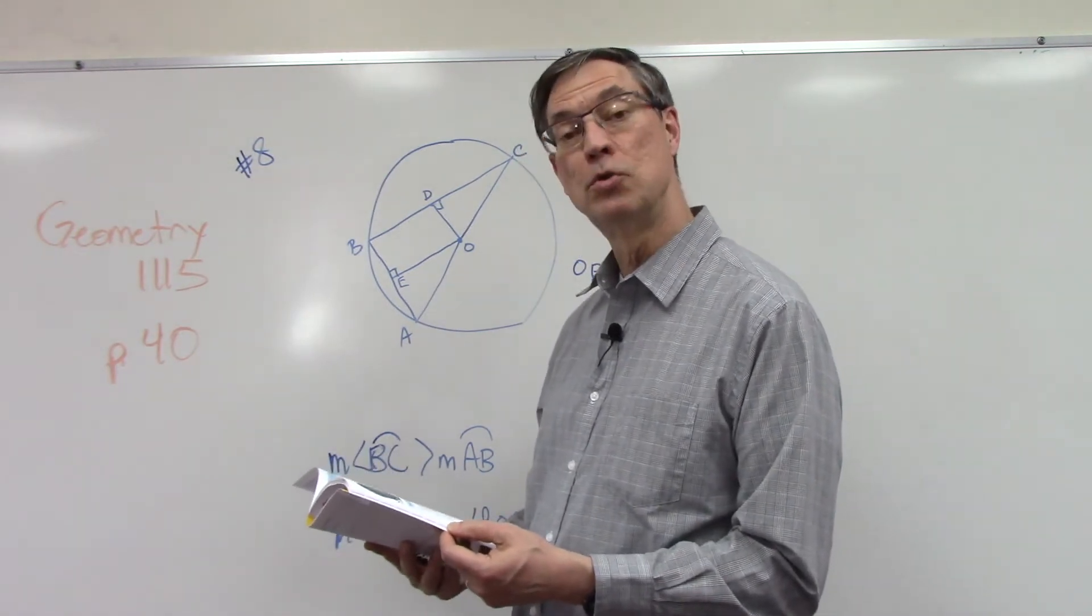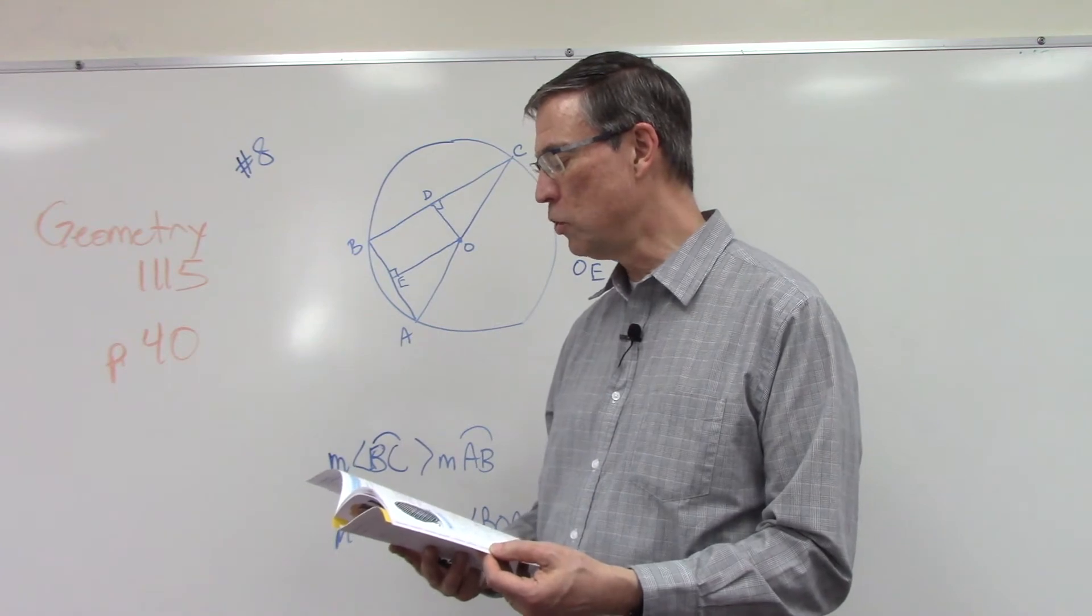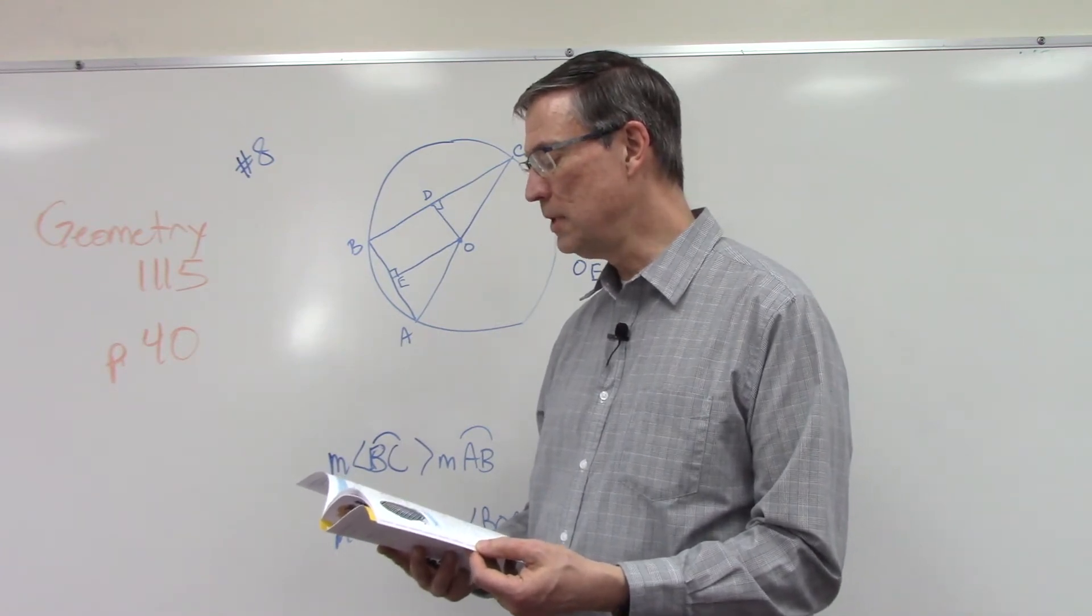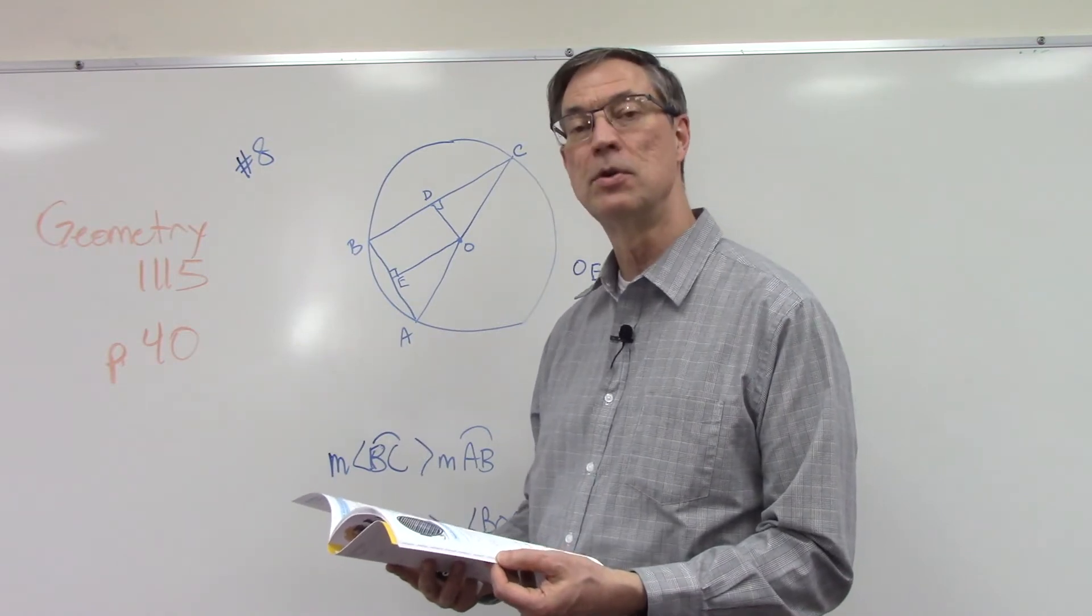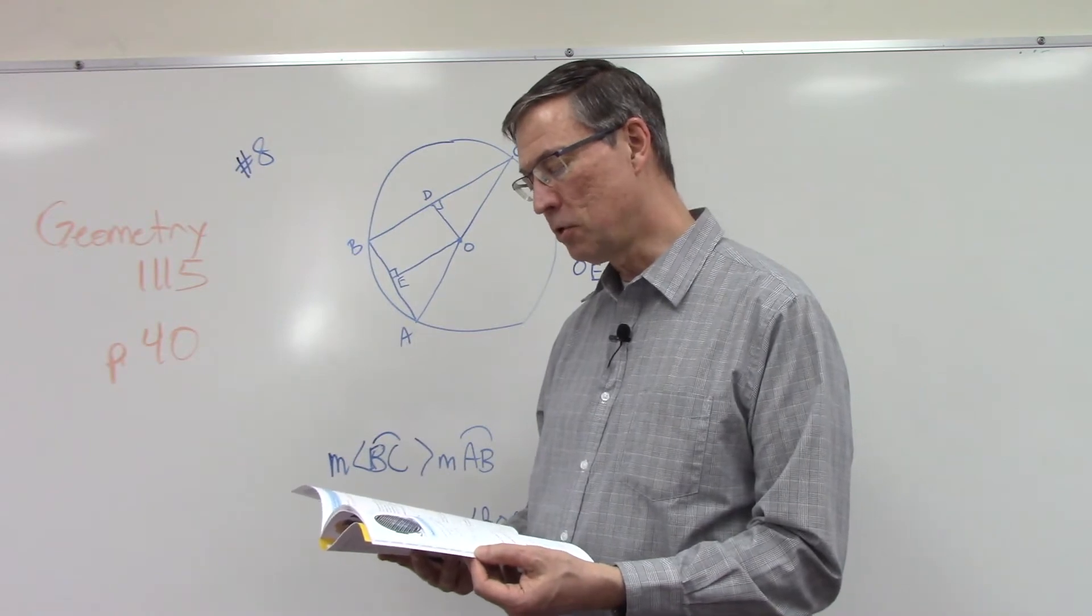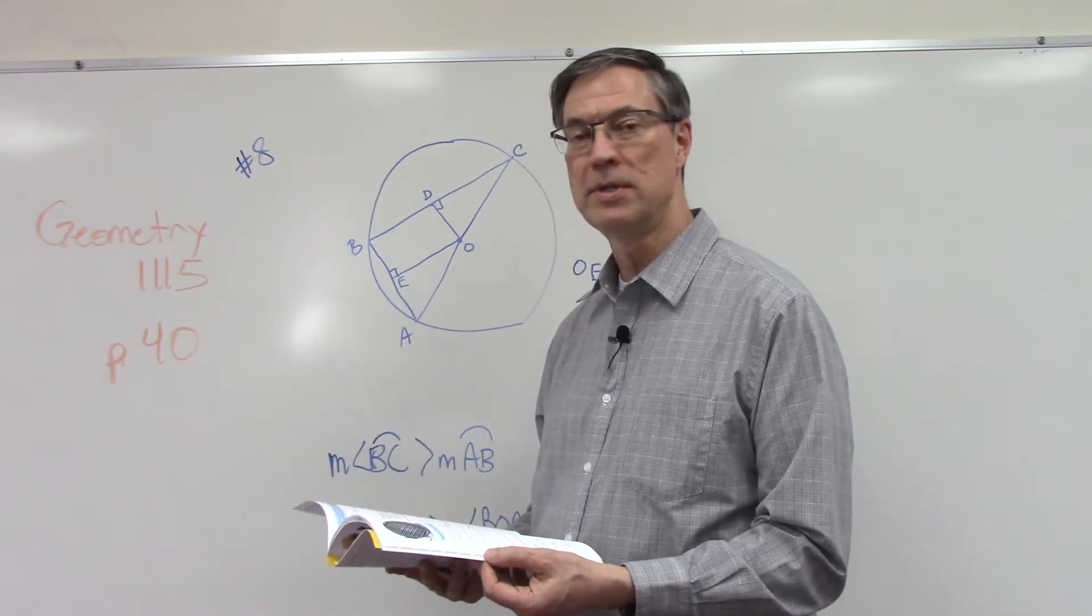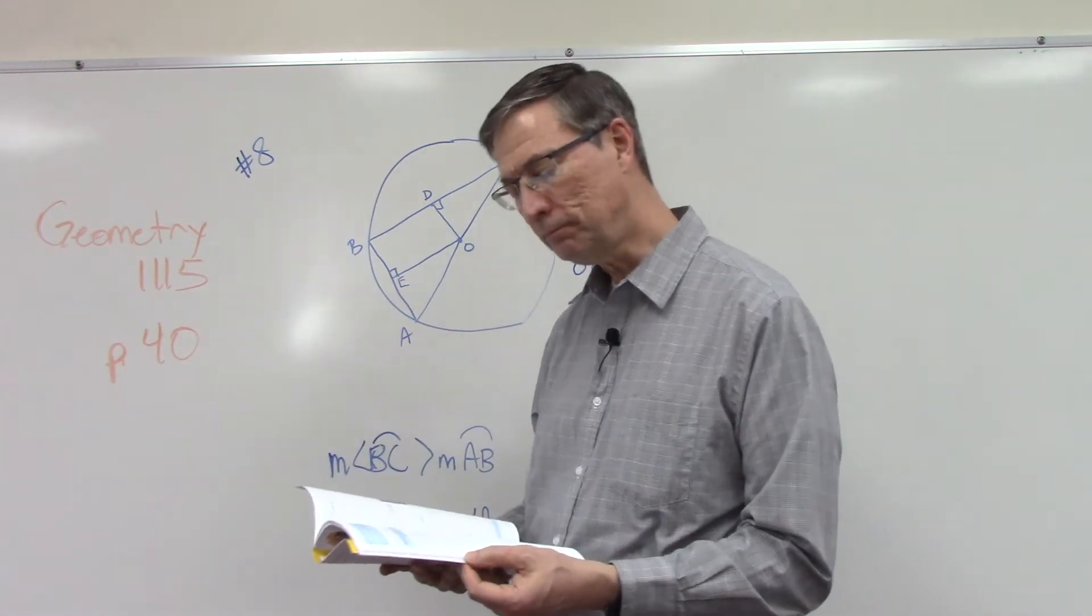Theorem 82 on page 38: if in the same circle or congruent circles two chords are unequally distant from the center, then the chord nearer the center is longer. Or Theorem 81: in the same circle, the chord that is longer is nearer the center.